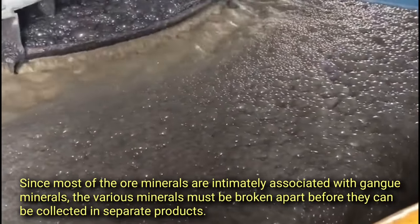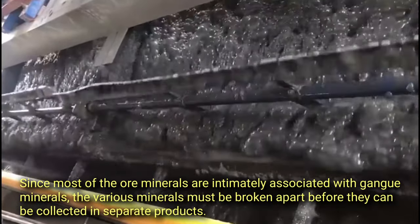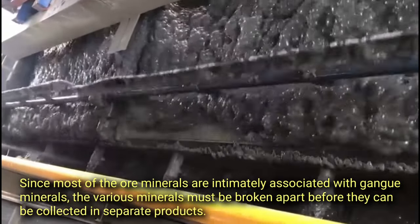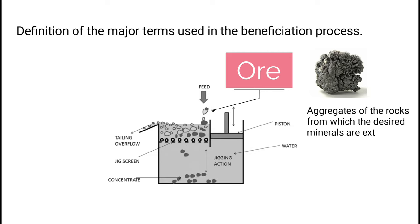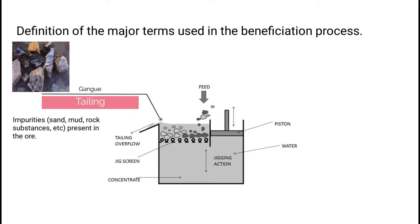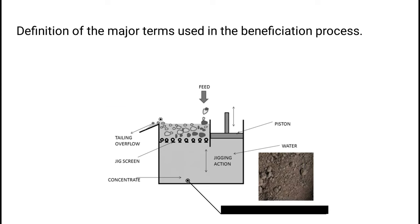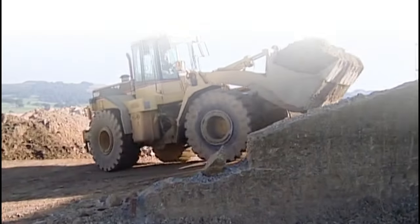Since most of the ore minerals are intimately associated with gangue minerals, the various minerals must be broken apart before they can be collected in separate products. Definition of the major terms used in the beneficiation process: Ore — the aggregates of rocks from which the desired minerals are extracted. Gangue — the impurities such as sand, mud, and rock substances present in the ore. Concentrate — the enriched portion containing the essential mineral from the respective ore.